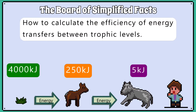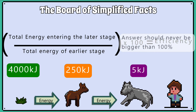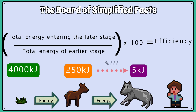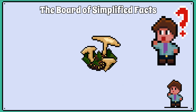A higher tier skill you need is how to calculate the efficiency of energy transfers between trophic levels. To calculate the efficiency, you divide the later stage in the food chain by the earlier stage and then multiply by 100%. If you have a bigger number on the bottom — the denominator — you know you are going in the right direction. You should never get an answer bigger than 100%; if you do, you have made a mistake. For example, if 250 kilojoules of energy enters a deer and then 5 kilojoules is passed on to the wolf when it consumes the deer, we put 5 on the top — the numerator — divide it by 250 kilojoules, and multiply by 100% to get an answer of 2%.